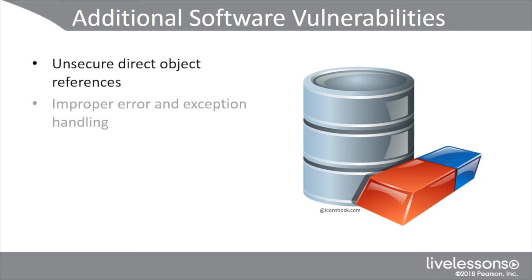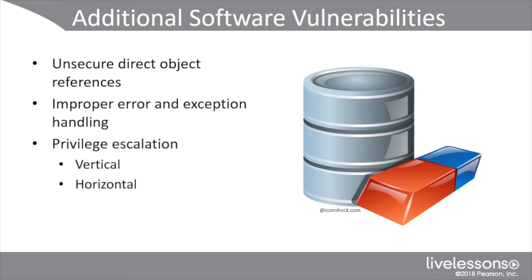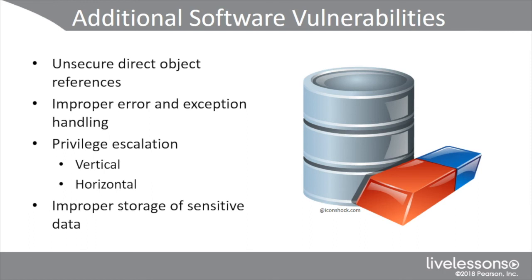Other software vulnerabilities include insecure direct object references, improper error and exception handling, vertical and horizontal privilege escalation once they get access to the system, and improperly storing sensitive data — in other words, insecure back-end servers. Because of the problems with SQL, you're seeing a lot of organizations move to NoSQL or other types of unstructured databases like Hadoop and MongoDB.